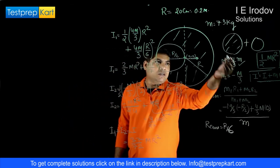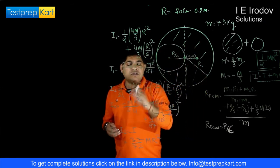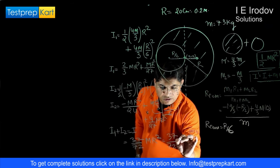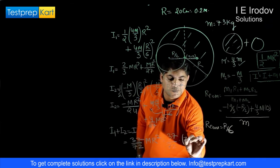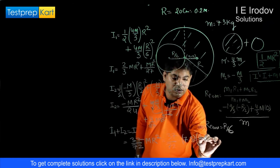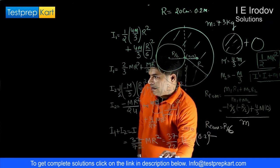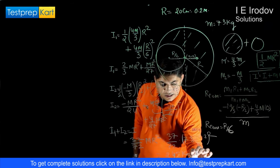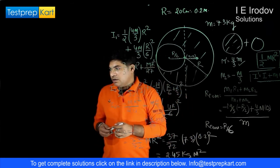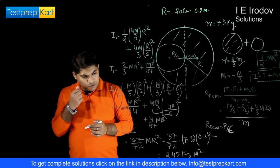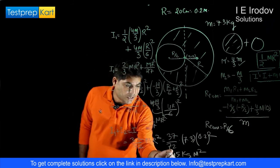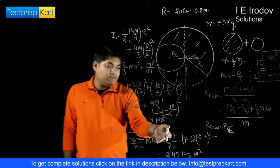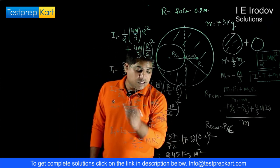With m = 7.3 kg and r = 0.2 m, substituting into (37/72) × 7.3 × (0.2)² gives the final answer of approximately 0.45 kg·m².